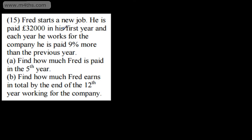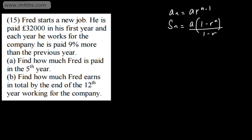Question 15. In part A, we're asked to find out how much Fred is paid in the fifth year, and in part B, find how much Fred earns in total by the end of the 12th year working for the company. With a question like this, we've got a couple of issues. We need to find the values of A, R, S, and N, if we do, whichever ones you need to find. And also, we need to establish whether we're looking for a term such that we'll use A sub N equals A multiplied by R to the power of N minus 1, or we're looking for the sum. The sum of N terms, one particular approach is 1 minus R to the N over 1 minus R.